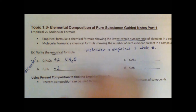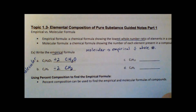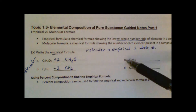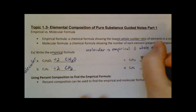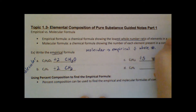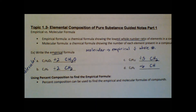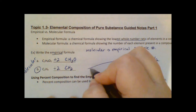For letter B, we can also divide by two and get the simplest ratio: CH2, meaning for every one carbon there are two hydrogens. For letter C, dividing by five gives CH2 as well. For letter D, dividing each subscript by six gives a ratio of one carbon for every one hydrogen. Notice that letters B and C have the same empirical formula despite being different chemicals.